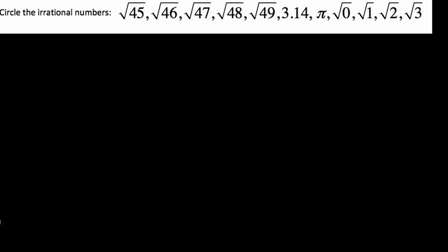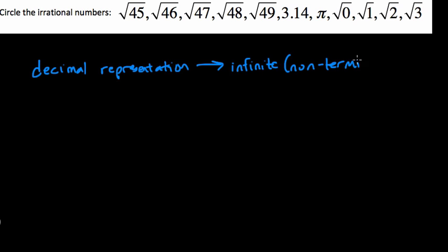Well, it means circle numbers where the decimal representation, if you try to represent these numbers with decimals, the decimal representation would be infinite, what they often call non-terminating. So the decimal representation would just keep going on and on and on. And it would have no pattern, have no repeating pattern.